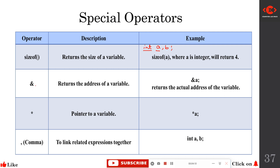The ampersand is also called the address operator. As the name indicates, it is used to get the address of a variable. Once a variable like 'a' or 'b' is declared, the system allocates memory space for it. To know where it is stored, we use the address operator — the ampersand symbol.